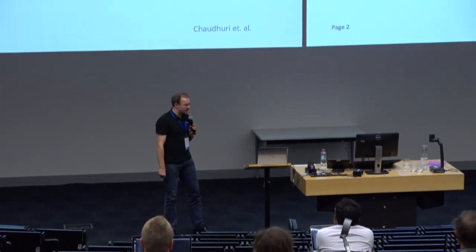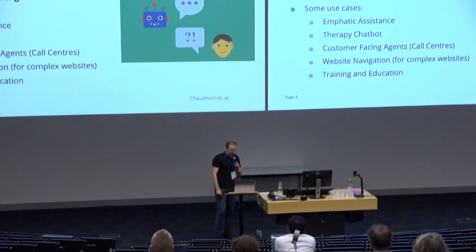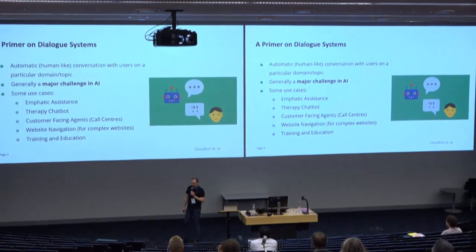The next talk is titled 'Using a KG Copy Network for Non-Goal-Oriented Dialogues,' presented by Jens. In the next presentation, I will show how we use knowledge graphs to tackle one of the major challenges in artificial intelligence. This is work from the SDA Smart Data Analytics Group at the University of Bonn and Fraunhofer IAIS. The first author couldn't come because of visa issues, so I'm taking over. In this talk, we are dealing with dialogue systems, where the goal is to have a human-like natural conversation with an intelligent agent.